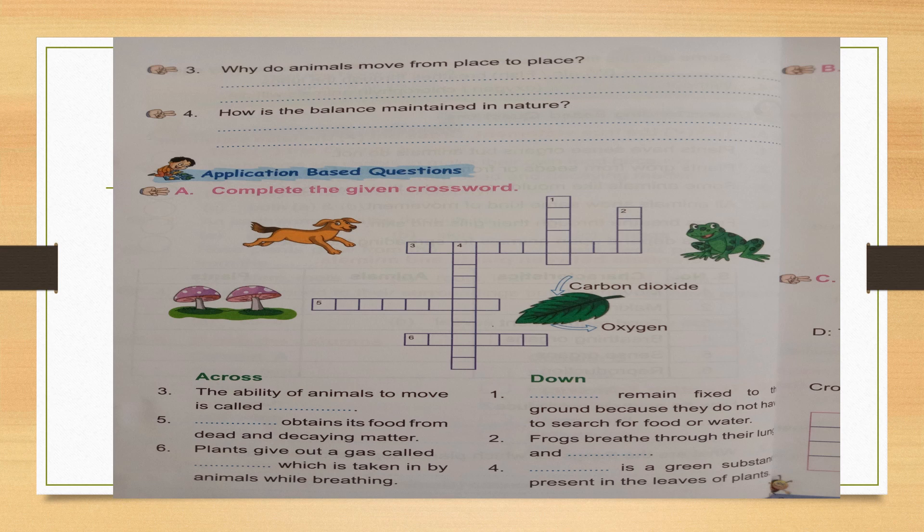The first across — near the dog box, you have third one — 10 boxes. The ability of animals to move is called dash — write 'locomotion' in those boxes. For the fifth one across, near the mushroom — 8 boxes: dash obtains its food from dead and decaying matter. Think and write each letter in each box.